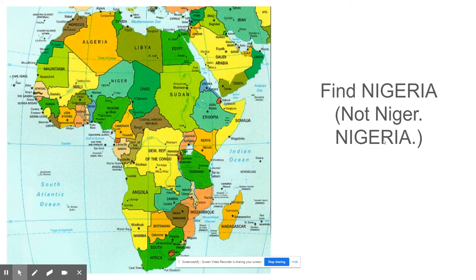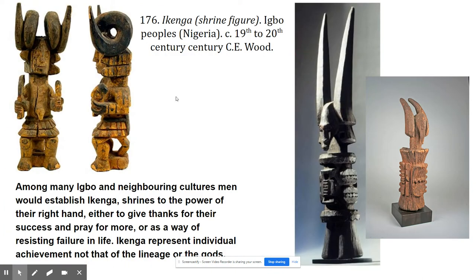The Aikenga is from Nigeria, and you should be able to find Nigeria on a map. We're not studying these works from Africa by country, but we are studying them by culture. Still, you need to know where these different cultures are located. And so Nigeria is here.